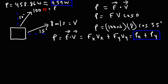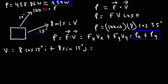First, we need to get these two vectors in component form. Starting with the velocity vector: the magnitude is 8 and the angle with respect to the x-axis is 15 degrees. So we have 8 cosine 15 degrees times the unit vector î plus 8 sine 15 degrees times the unit vector ĵ. 8 cosine 15 equals 7.7274, and 8 sine 15 equals 2.07055.